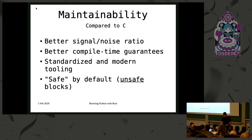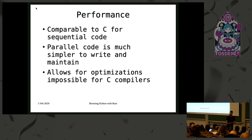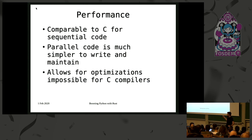There are many reasons to choose Rust, but one of the main reasons is performance. It's comparable to C for sequential code. Parallel code is much simpler to write and to maintain, so for us in a version control system, it's a very good asset.